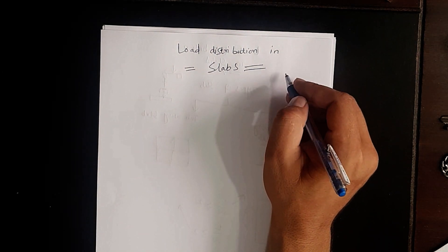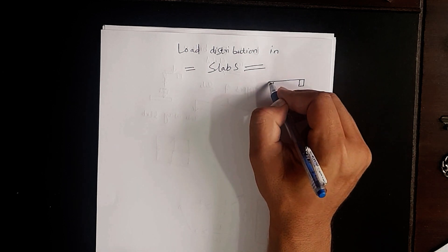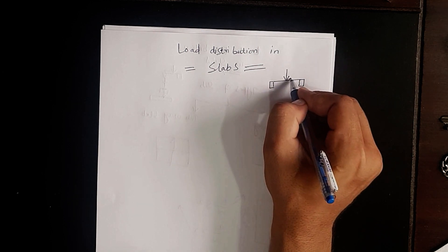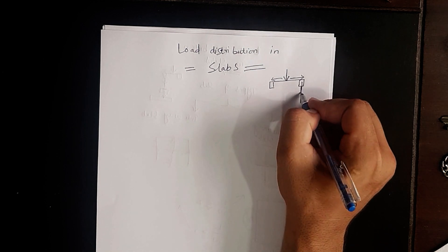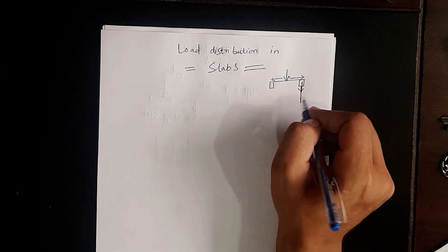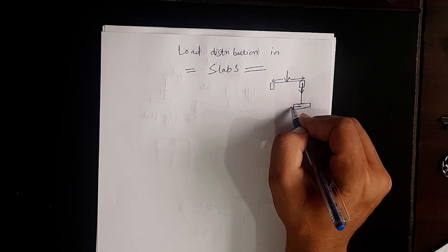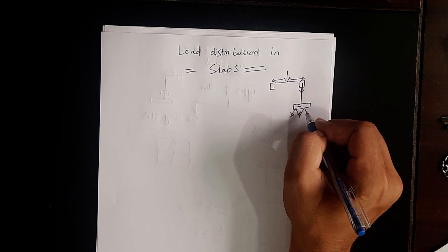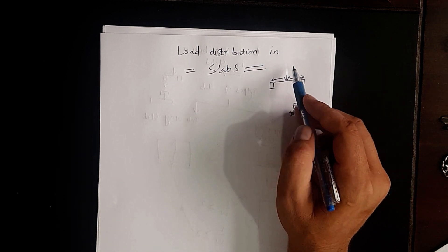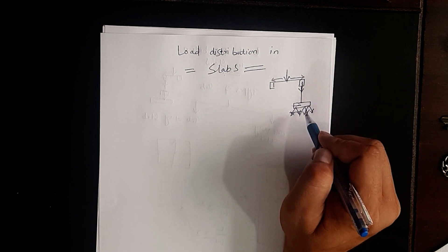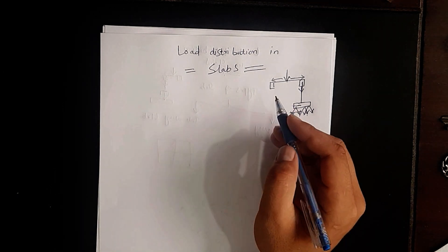I would like to talk about the mechanism of load distribution — how load is distributed. Let's suppose this is a slab, and a slab will be supported by beams. If a load is applied on the slab, the slab is going to transfer it to the beams, and the beams are going to transfer it to the columns, then to the foundations, and the foundation transfers it to the sub-base. So the overall path is: slab → beams → columns → foundation → sub-base.